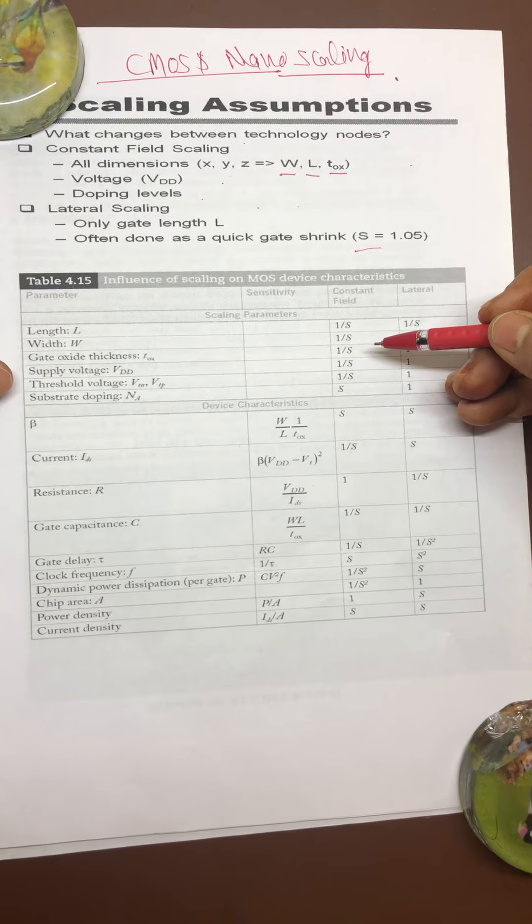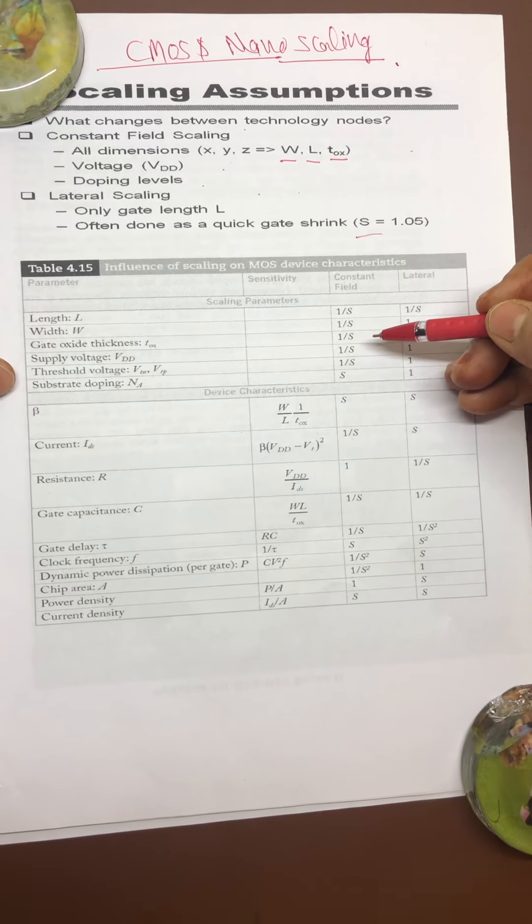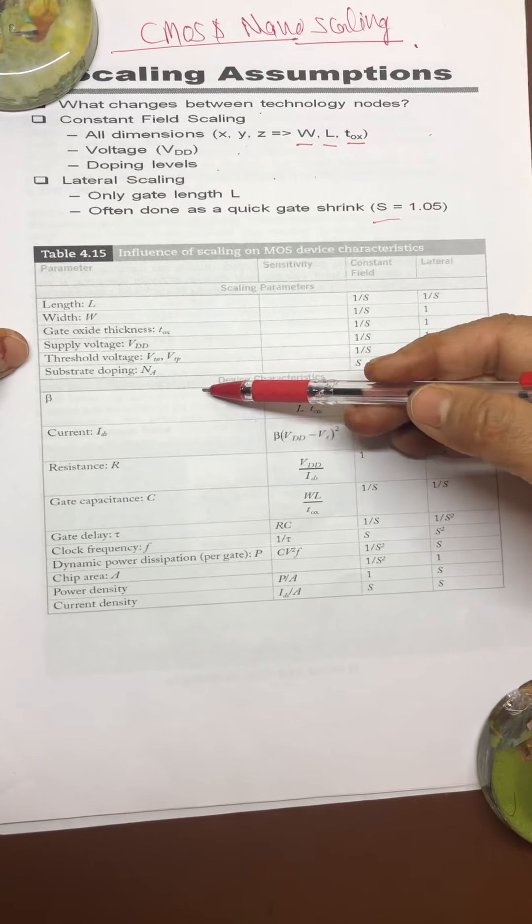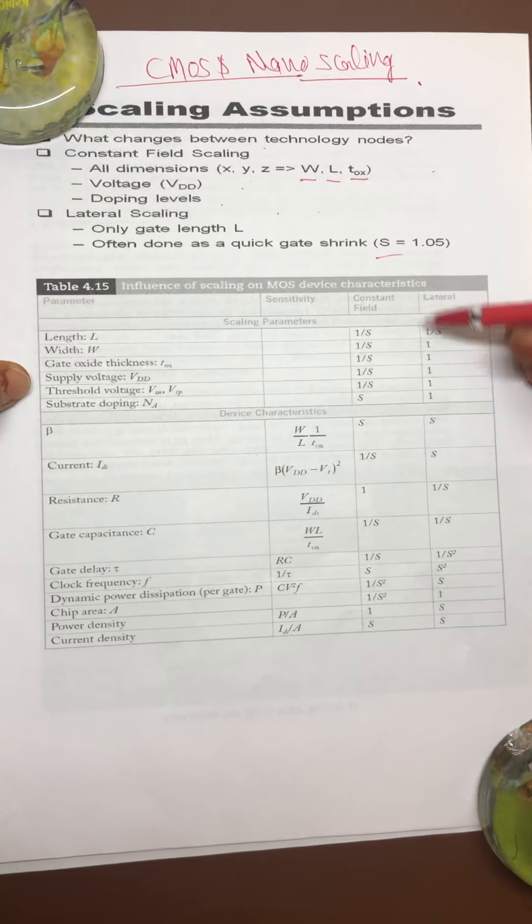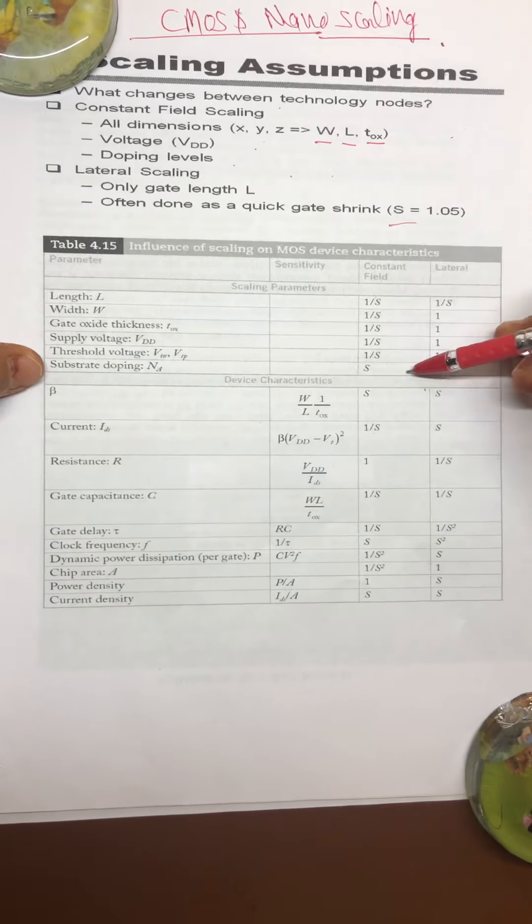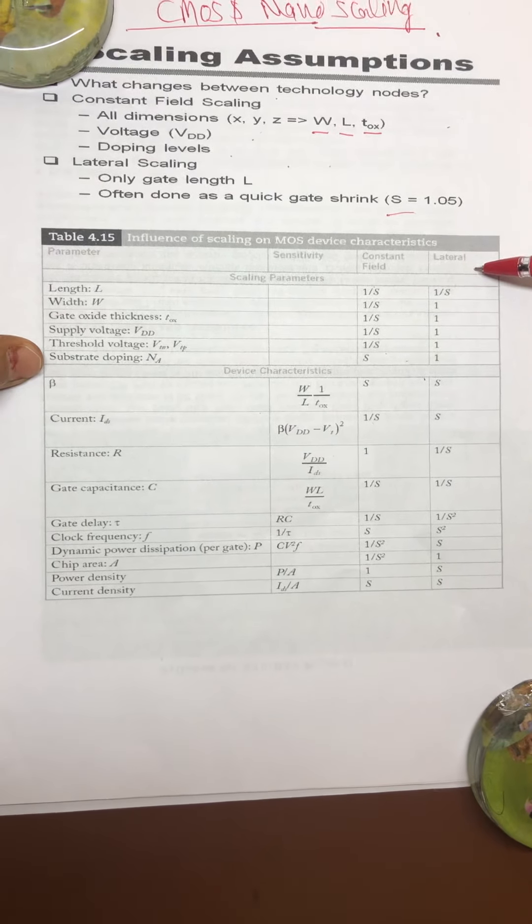With respect to this, the scaling factor variation: with constant field it is 1 by S except N_A, and for lateral scaling, length is 1 by S, remaining are 1.